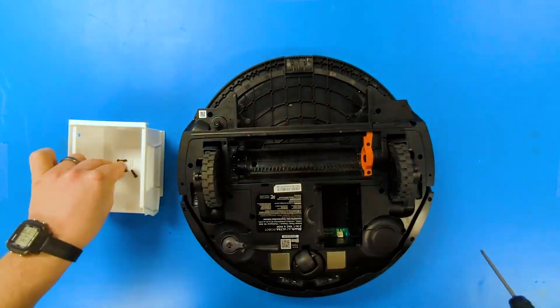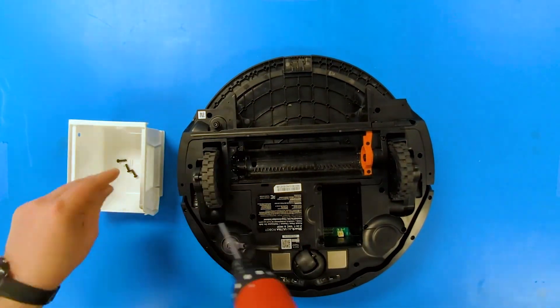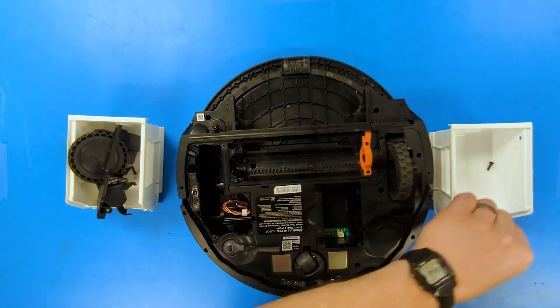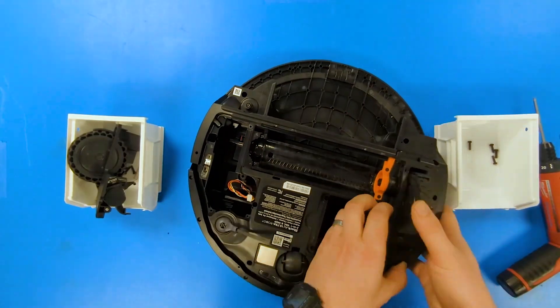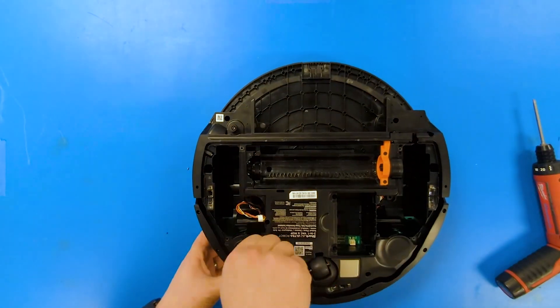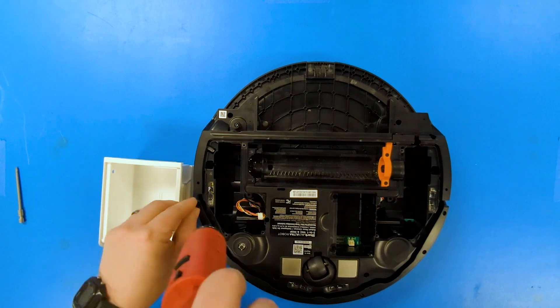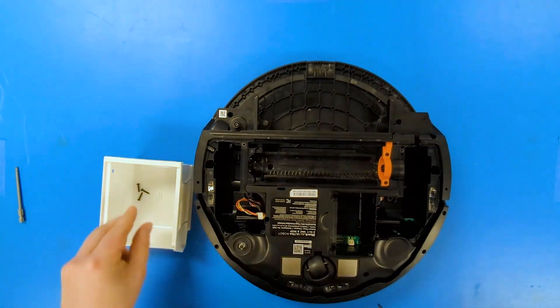Start by taking off a handful of screws so that we can remove the left and right wheels. Next up we go ahead and remove the side brush roller and we'll start working on getting the front bumper removed from the device.